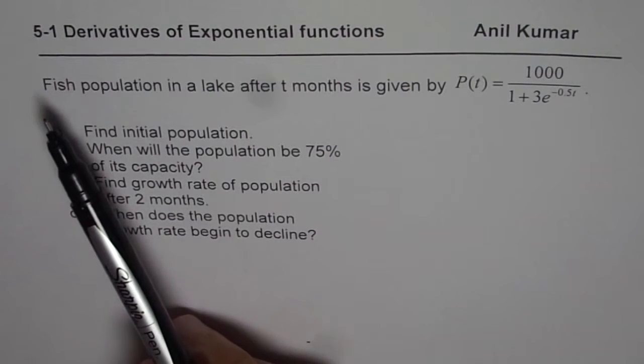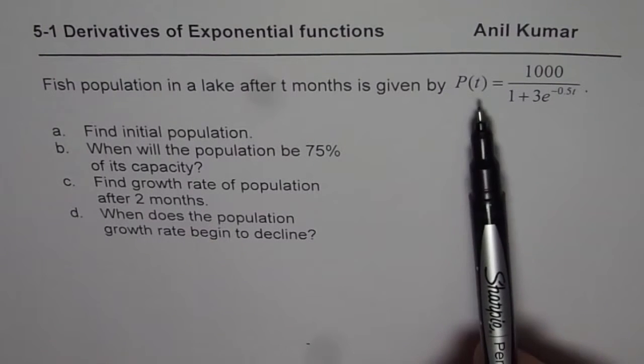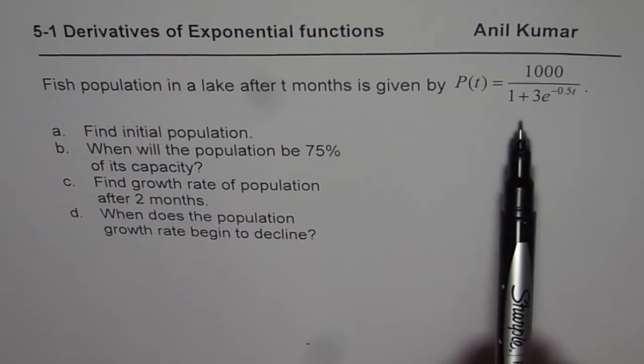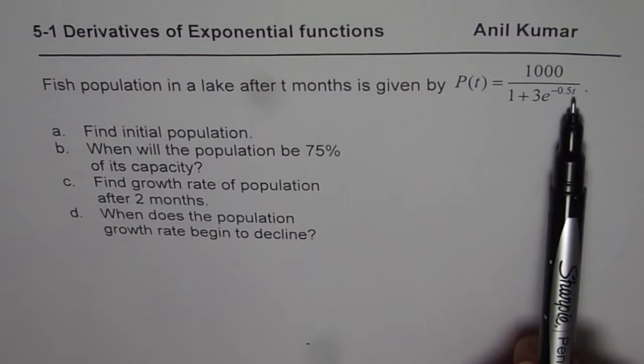Now, the question here is, fish population in a lake after t months is given by P(t) equals 1000 divided by 1 plus 3e to the power of minus 0.5t.